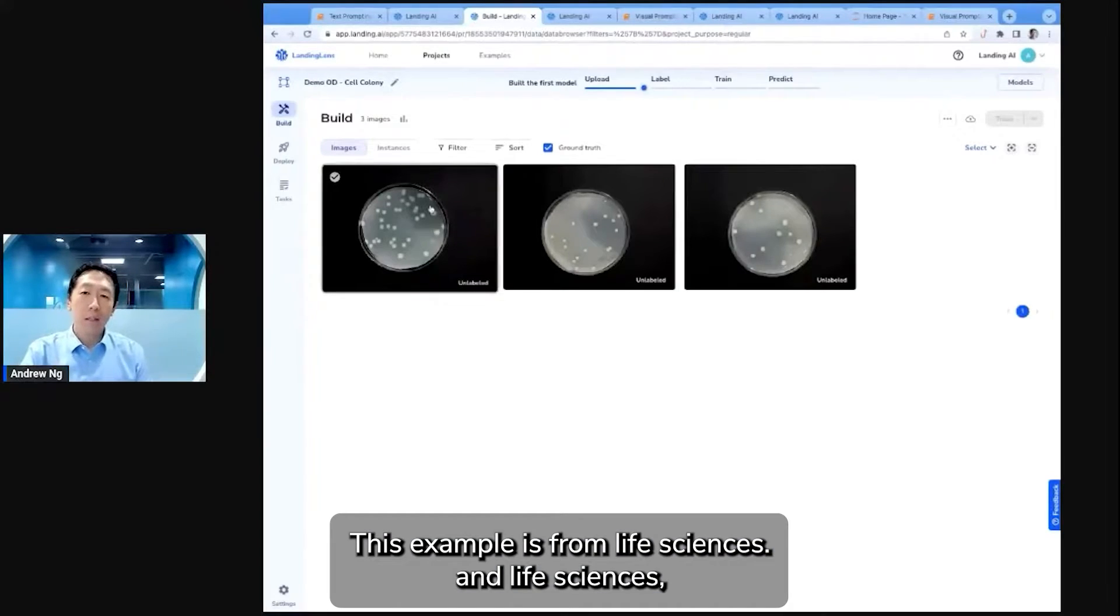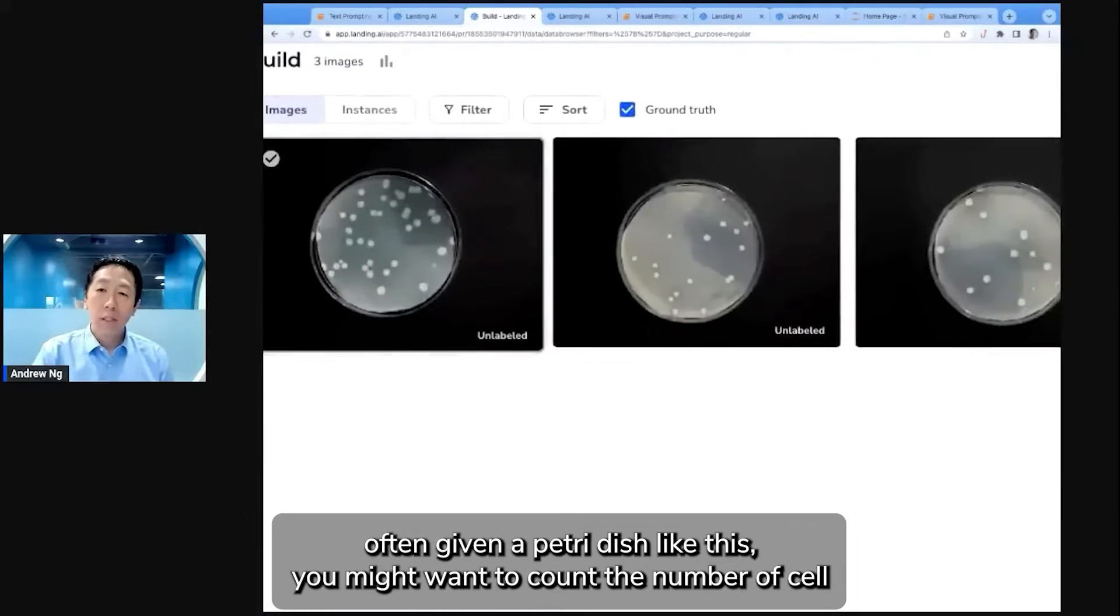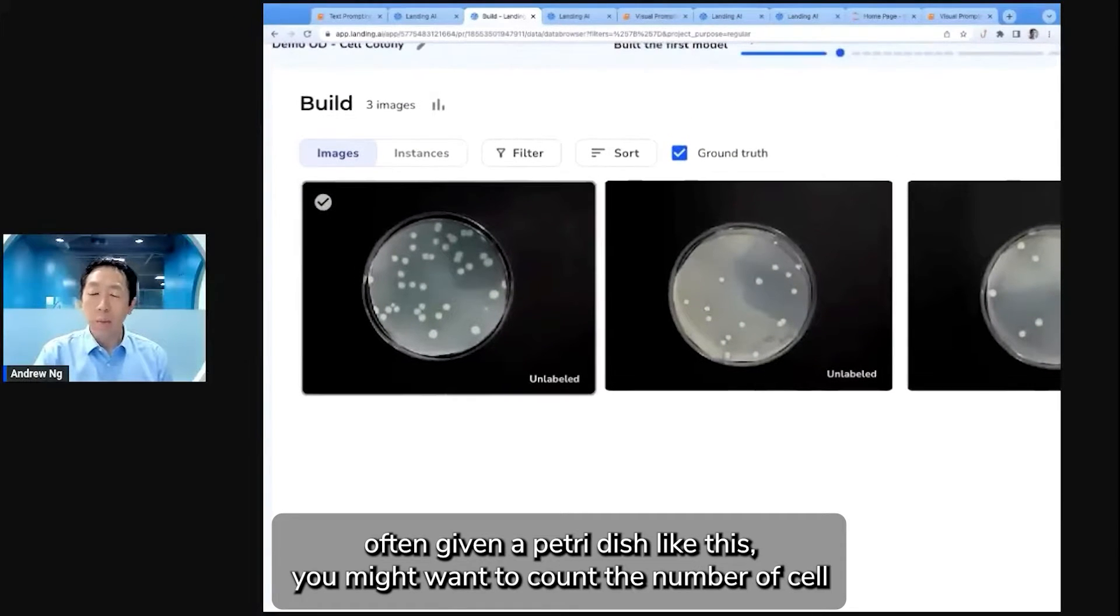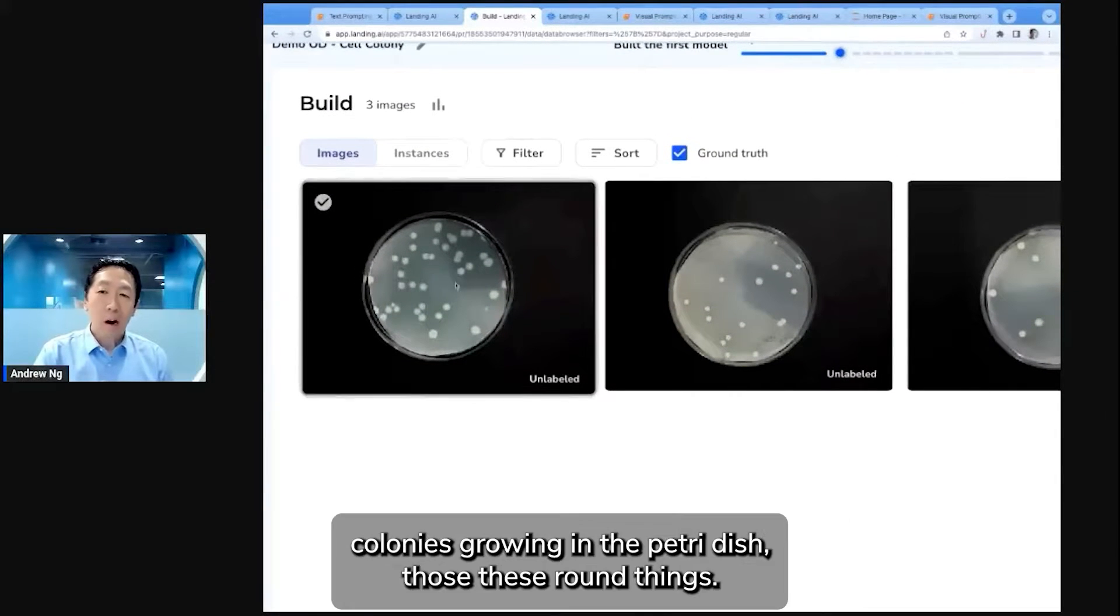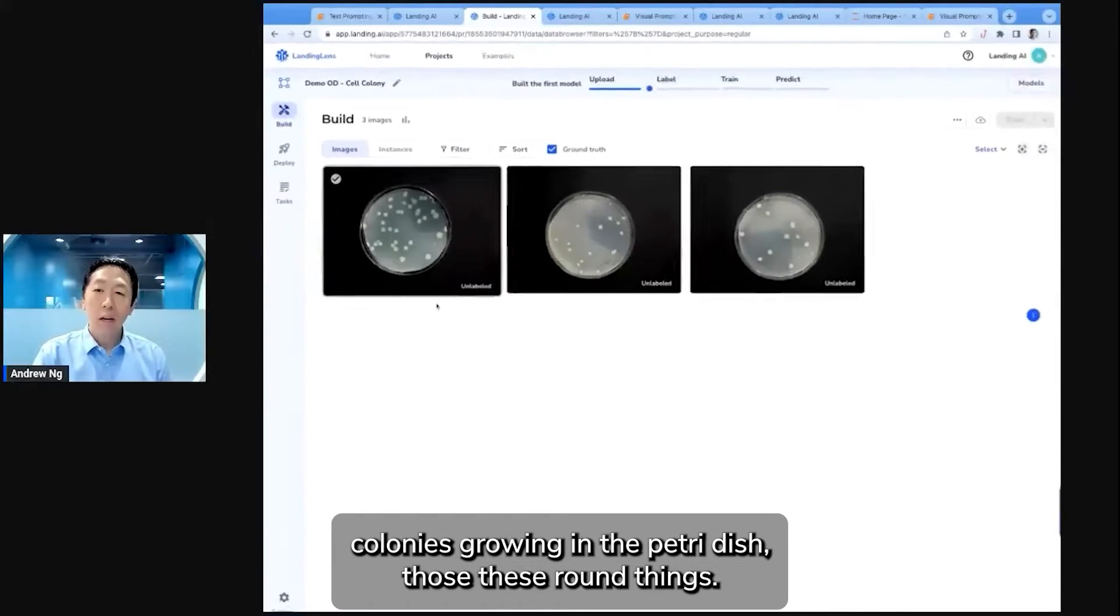Just an example from life sciences. Life sciences often given a Petri dish like this, you might want to count the number of cell colonies growing in the Petri dish. Those are these little round things.